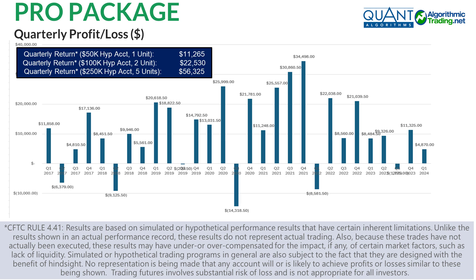This shows the dollar return per quarter per unit traded for the different account sizes. For example, suppose you open the account with $50,000 and you're trading one unit — the quarterly return in the hypothetical account has been $11,265. If you're trading two units with a $100K account, it would be twice that, or $22,530. And if you were doing five units, it'd be as much as $56,000 per quarter.